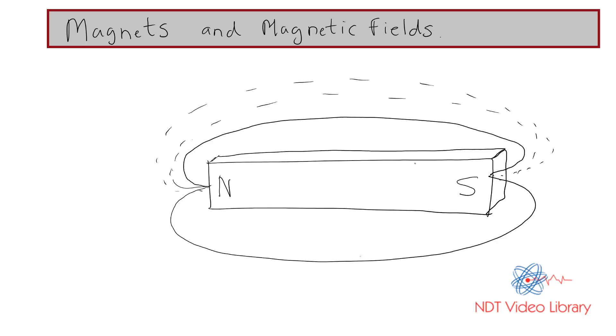These are invisible lines of magnetic force which come out of the north pole and go inside the south pole outside the bar magnet. But inside the bar magnet, they move from south to the north pole. So take care of the directions: outside the bar magnet they go from north to south, and inside the bar magnet they go from south to north.